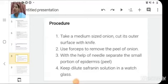In procedure, we will take a medium sized onion and we will cut out its outer surface with a knife. Then we will use forceps to remove the peel of onion.